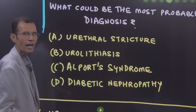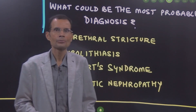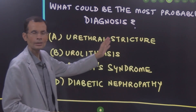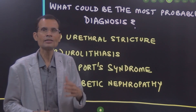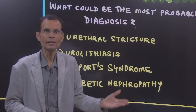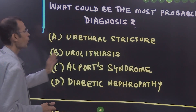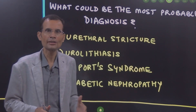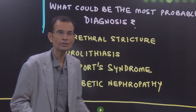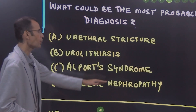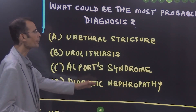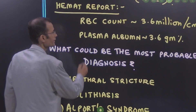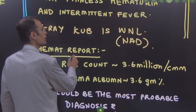The options given are: urethral stricture, urolithiasis or nephrolithiasis — that is renal stones — Alport syndrome, or diabetic nephropathy. Let us discuss each option and understand what the case is.